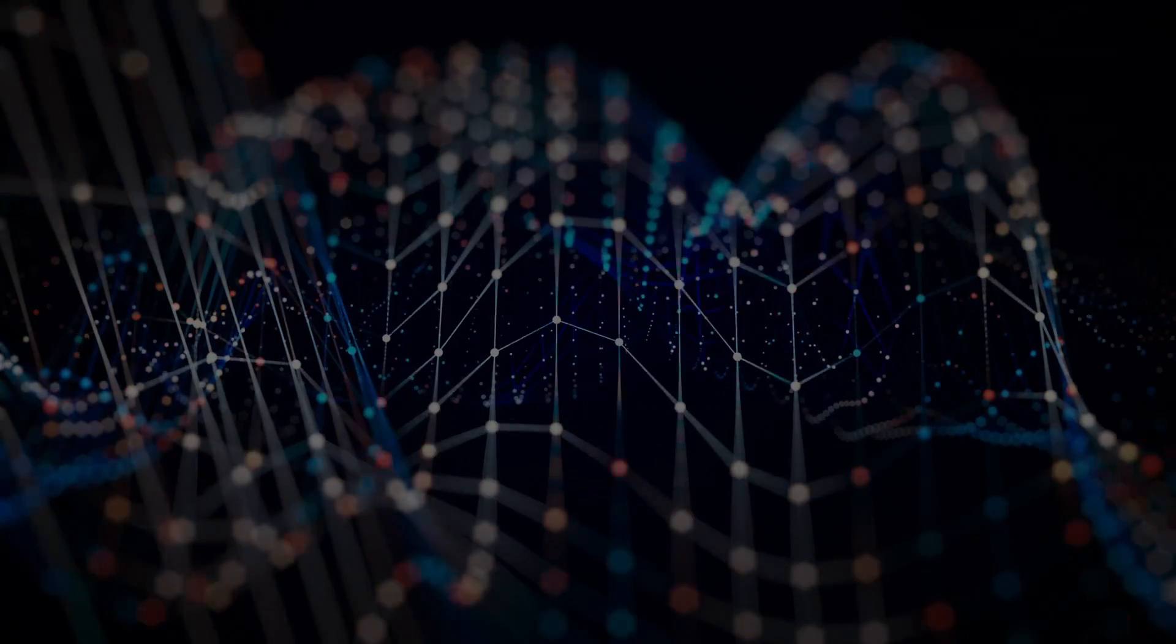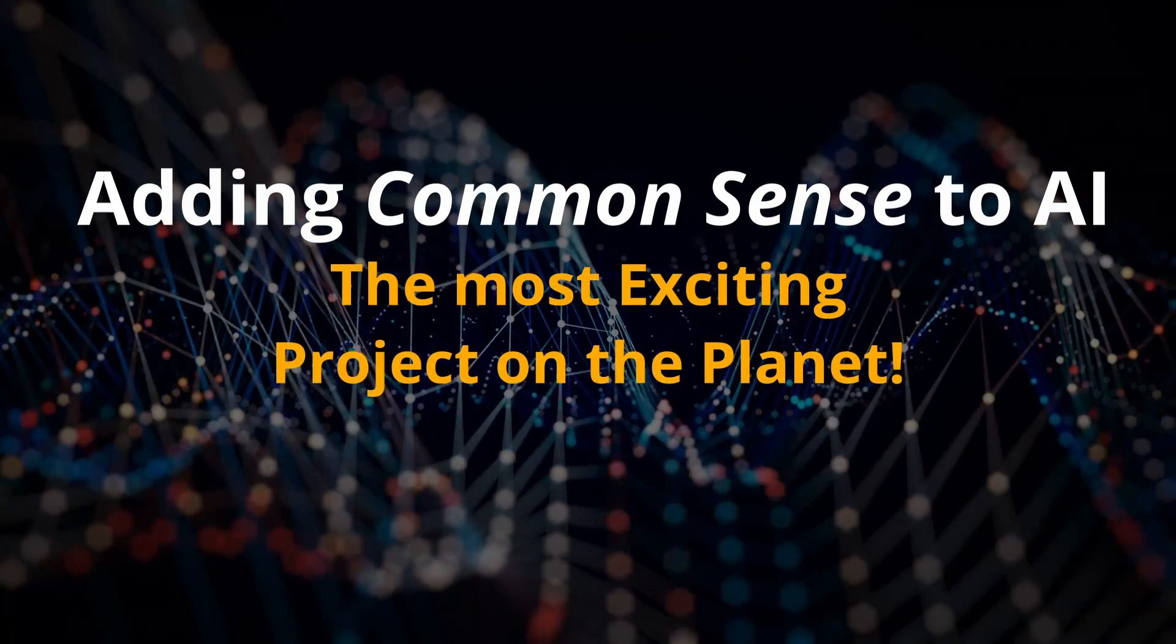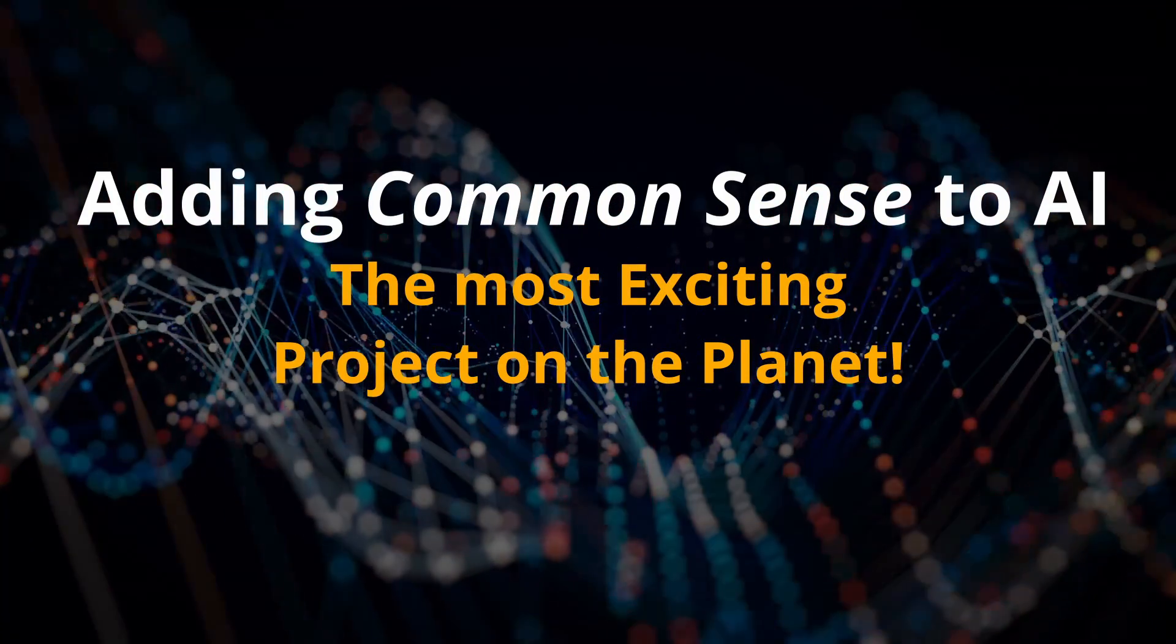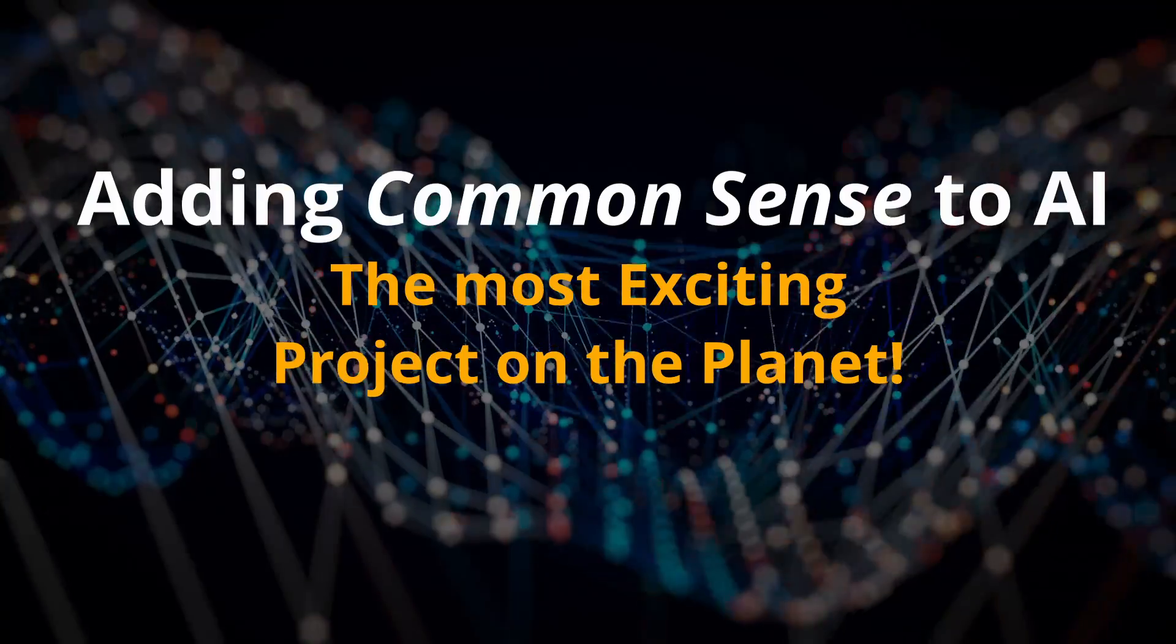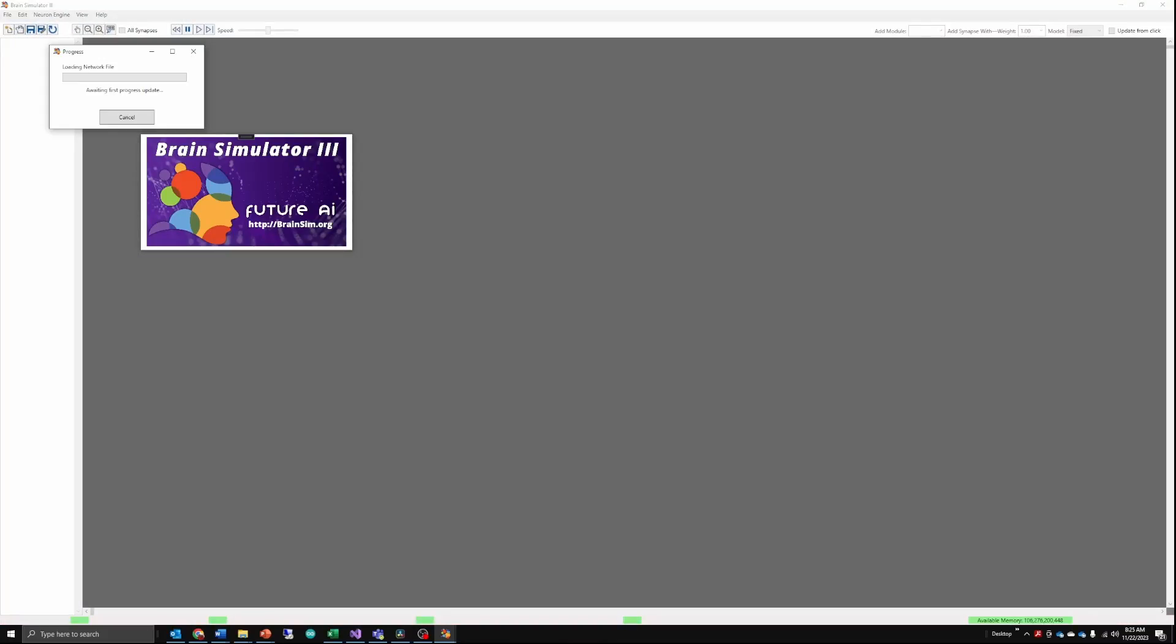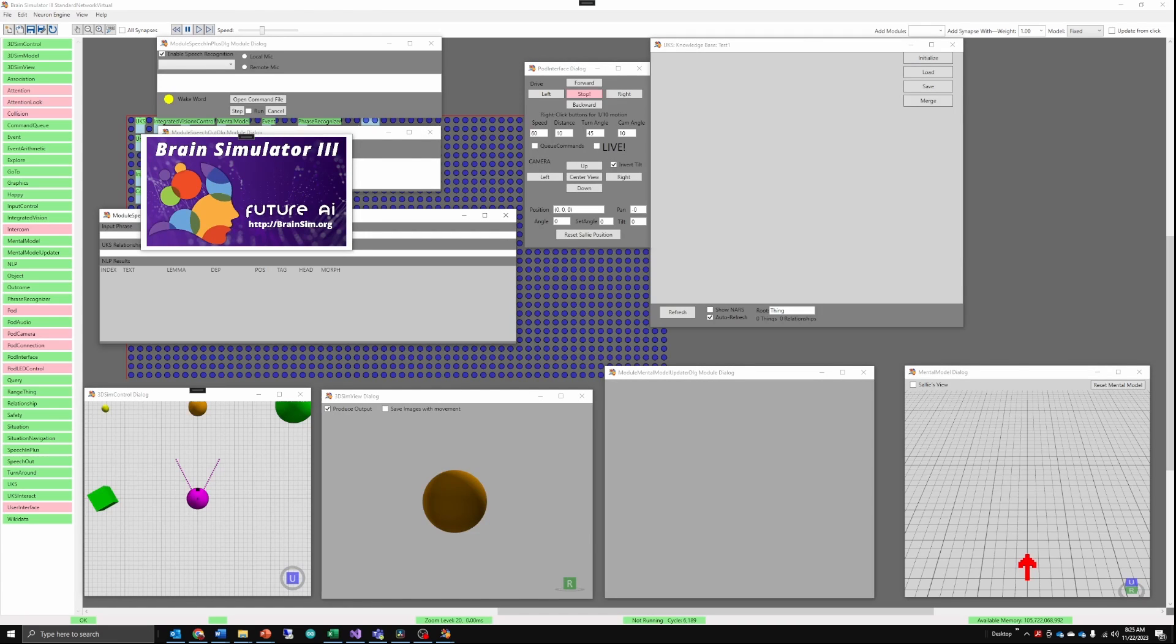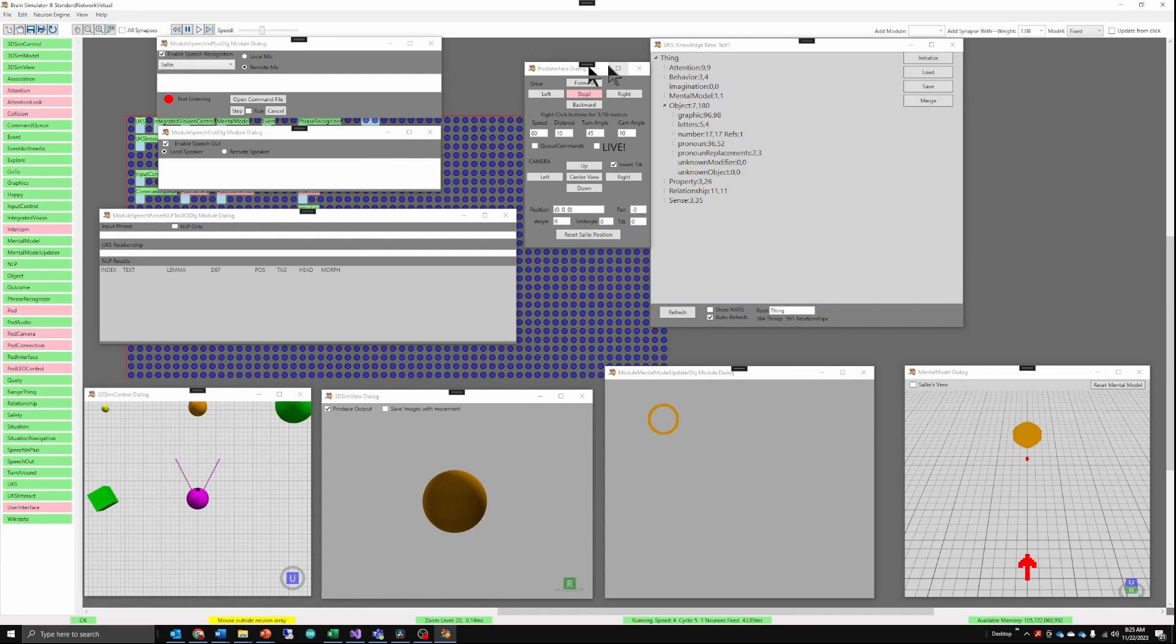This video will give you key insight into adding common sense to artificial intelligence. It describes the most important aspects of the way your brain arranges knowledge with huge implications for how we can implement similar structures in computers. Most of what I'm going to describe has been included in the Brain Simulator 3 software, which will be open source from the Future AI Society.